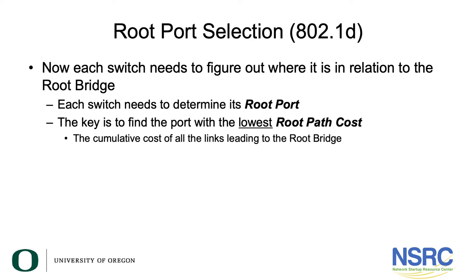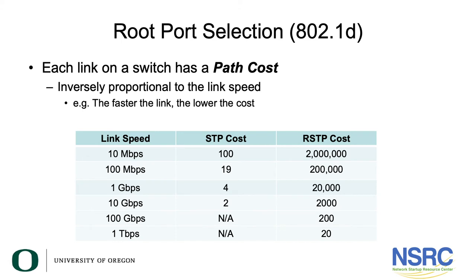Step two is to determine the root port on each non-root switch. This is done by finding the port with the lowest root path cost — the cumulative cost of all links leading to the root bridge when going out through that port. Every link on a switch has a path cost defined by the spanning tree protocol, and it is inversely proportional to the link speed.